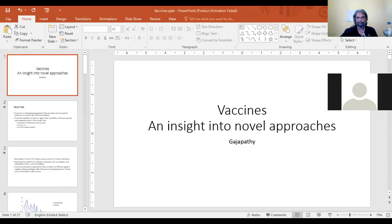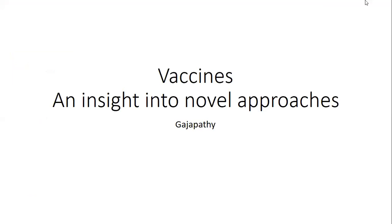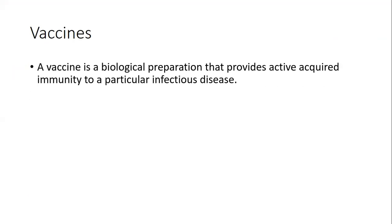We are going to look into some novel approaches in vaccine production, the basic function of those vaccines, why they are important, their significance, and maybe some examples. A vaccine is defined as any biological component which can provide active acquired immunity.